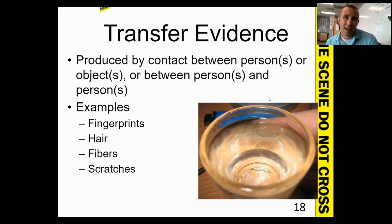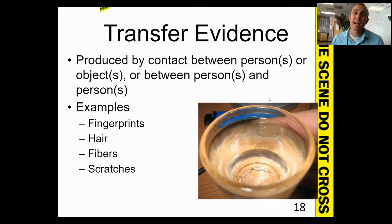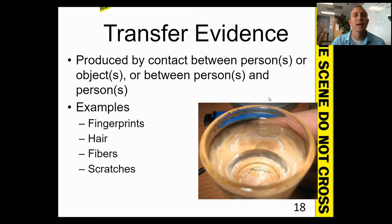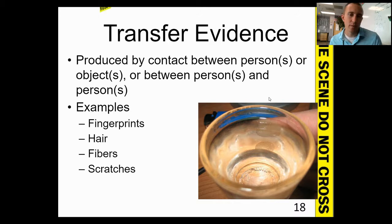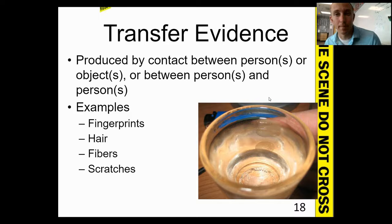Transfer evidence — which is commonly mixed up with pattern — involves contact between a person and an object, or between two persons. A fingerprint left on a bowl from someone's hand touching it is an example of transfer from a person to an object. Hair or fibers left on a victim from a suspect, or defensive wounds on a suspect from the victim, are also examples of transfer evidence.